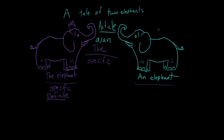If you're not being specific — if you're talking about any old elephant, an elephant that you're not especially familiar with, an elephant you haven't introduced before — you would say an elephant. Because it's not specific and it's undefined. Grammarians call that an indefinite article.